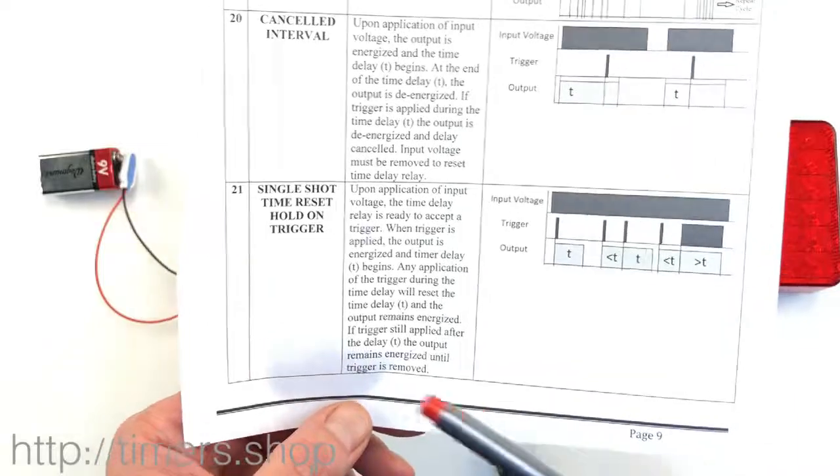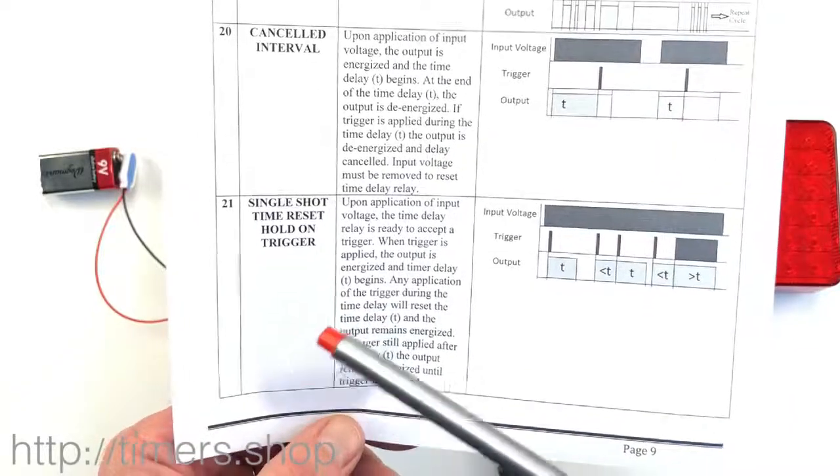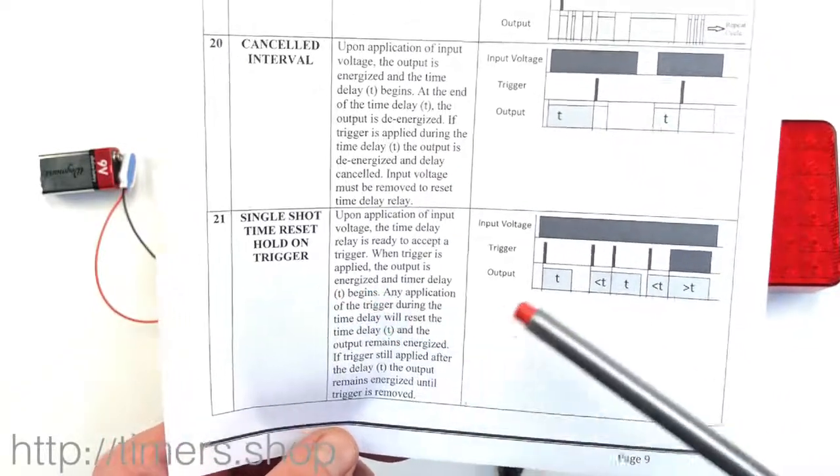Okay, so let's look at function 21, single shot time reset with hold on trigger. So what does it do?